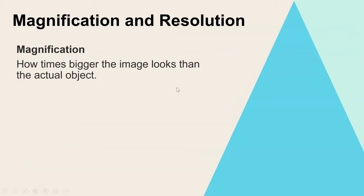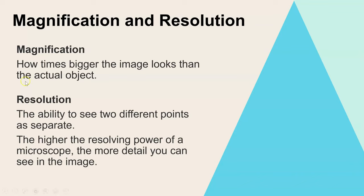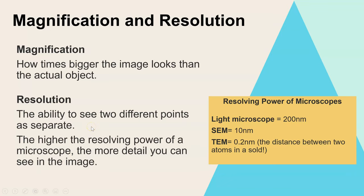Now let's look at what the two key terms magnification and resolution actually mean. Magnification is how many times bigger the image looks compared to the actual size of the object. Resolution is the ability to see two different points as separate — essentially, how crisp and clear the image looks. The higher the resolving power of a microscope, the more detail you can see, which is why with electron microscopes you are able to see subcellular structures in detail.